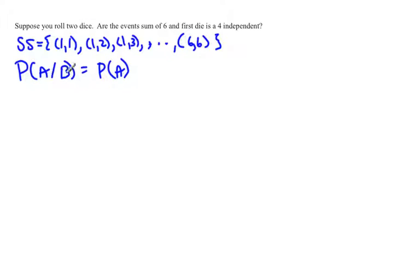The first thing to do is figure out which event is A and which is B. It doesn't matter, so you can just let A equal one event and B equal the other. Let's let A equal the sum of 6, and let B equal that the first die is 4.